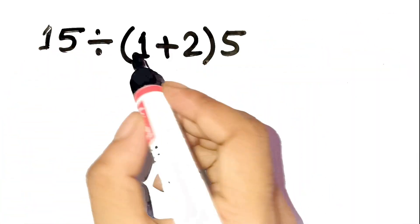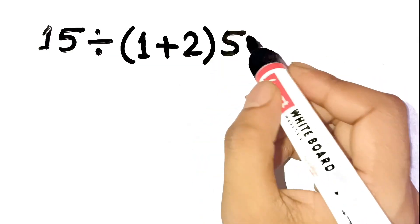15 divided by open parentheses 1 plus 2, close parentheses, times 5.